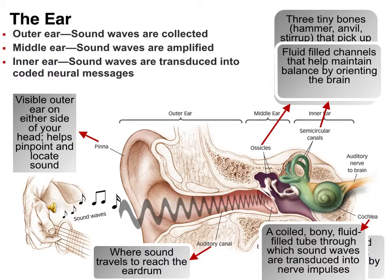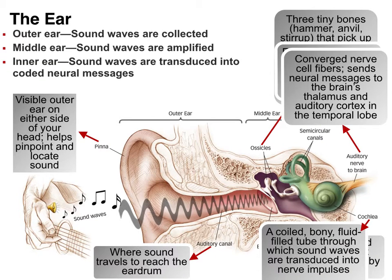We also have the semicircular canals, which help with balance and orientation. I assigned a crash course video — I'm only concerned with you watching about the first seven and a half minutes of it, since after that it covers semicircular canals and equilibrium, which is super interesting but not where we're at yet. Those first seven minutes do a really good job of further delving into this and showing you the pieces of anatomy. Once we get that information into the auditory nerve, it sends it to the brain — it goes to the thalamus, the auditory cortex, and then into the temporal lobe, which we'll cover more in subsequent chapters.